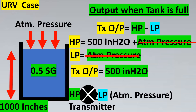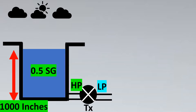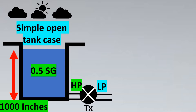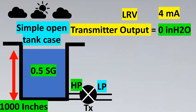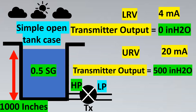Now let's consider cases where the transmitter cannot be placed exactly at the tapping location and must be shifted. First, let's quickly revise the simple open tank case: at LRV (4 mA), the transmitter output is 0 inches of H2O, and at URV (20 mA), the transmitter output is 500 inches of H2O, for the dry leg configuration where the transmitter is exactly at the tapping location.